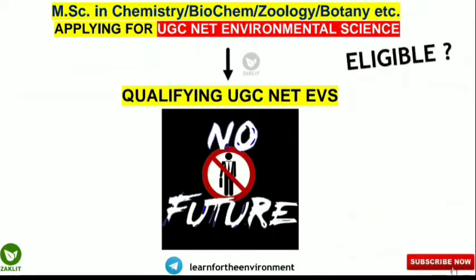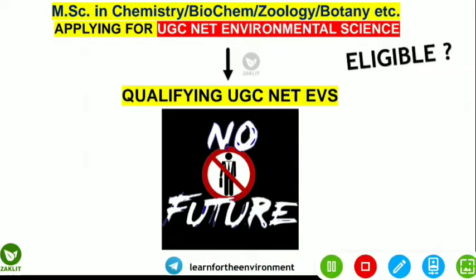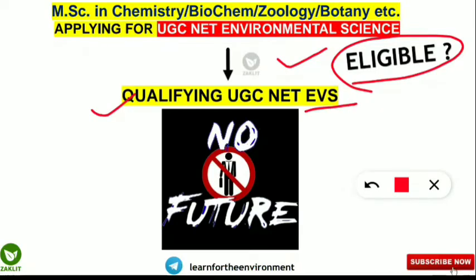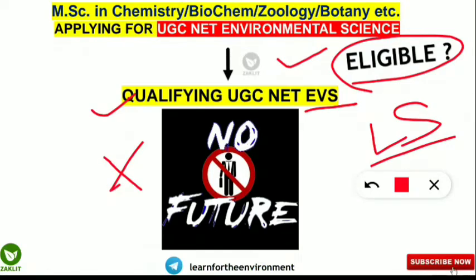The first doubt I will be clearing is: if you are not in the master's of environmental science — if you are from some other background such as chemistry, biochemistry, zoology, botany, etc. — then if you are applying for UGC NET environmental science, whether you are eligible or not. The answer is yes, you are eligible to appear for the UGC NET environmental science subject. But after qualifying the UGC NET EVS as lectureship only, you won't be having any future — and I will tell you why.